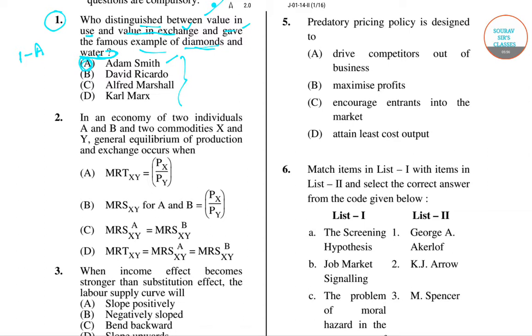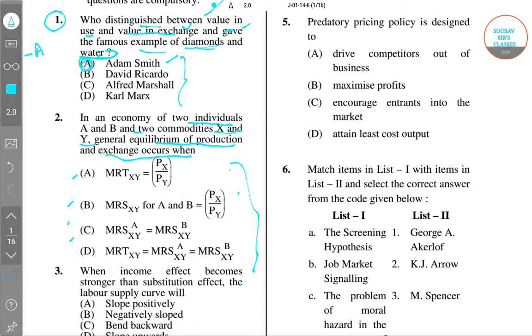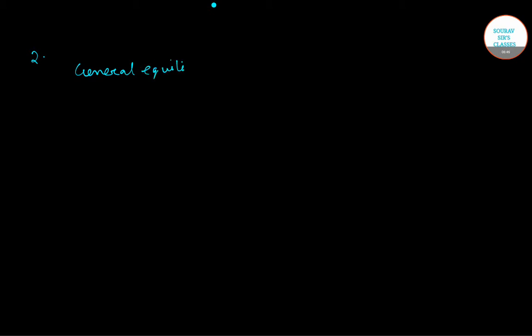Question number two: in an economy of two individuals A and B and two commodities X and Y, when does general equilibrium of production and exchange occur? First, we need to understand what general equilibrium of exchange is.